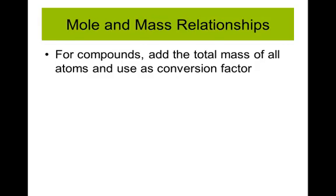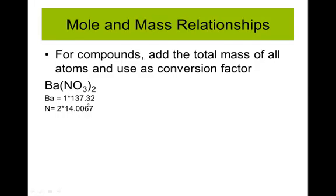For a compound, you're going to add the total mass of all of the atoms, then use that as a conversion factor. For barium nitrate, we have one barium — using its mass from the periodic table — two nitrogens from the two N, and a total of six oxygens because three times two equals six. Multiplying each by their periodic table mass and adding those all up gives a total of 261.27 grams per mole of barium nitrate.